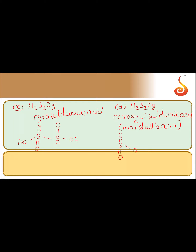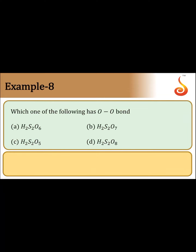The structure of peroxydisulfuric acid contains an O-O peroxy linkage, with double bond O and OH groups on each sulfur. So for the given question, which one of the following has an O-O bond — the answer is peroxydisulfuric acid, that is option D, H₂S₂O₈.